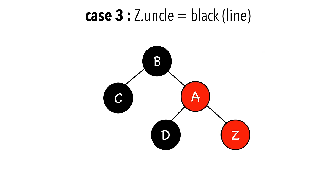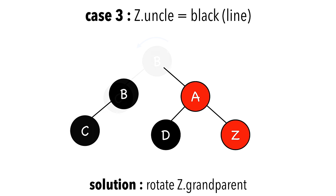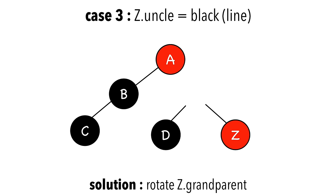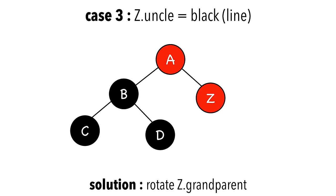For case 3, we rotate Z's grandparent, again in the opposite direction of Z, so that A takes the place of B. For case 3, you will need to recolor the original parent and grandparent after the rotation.